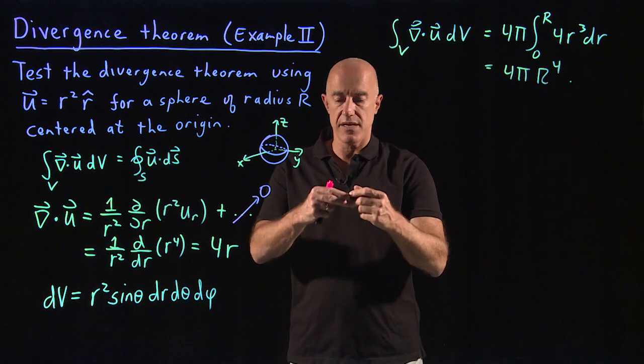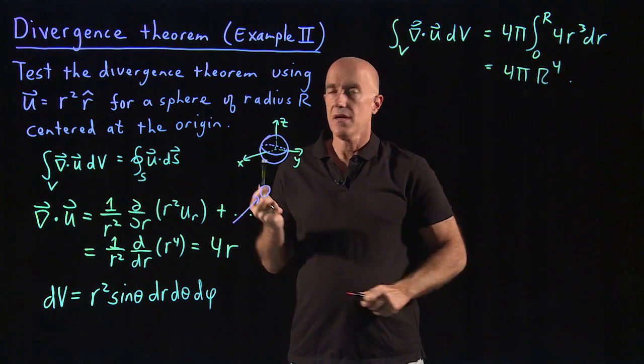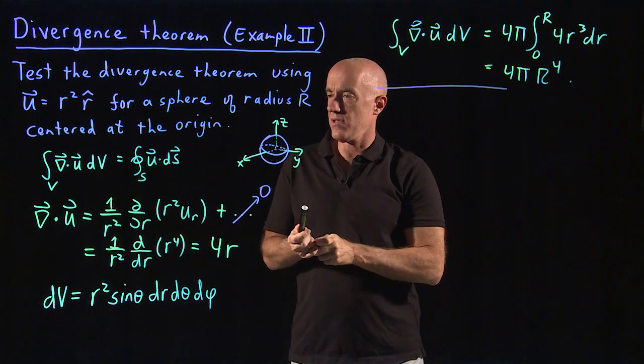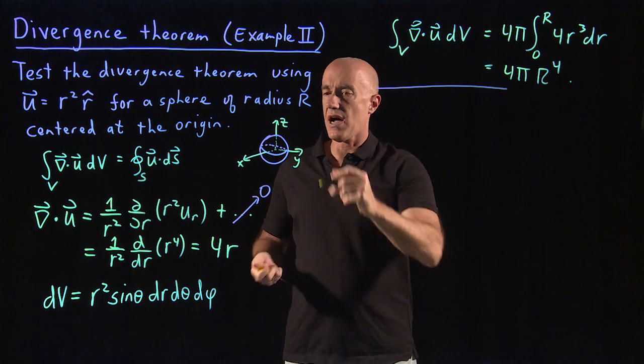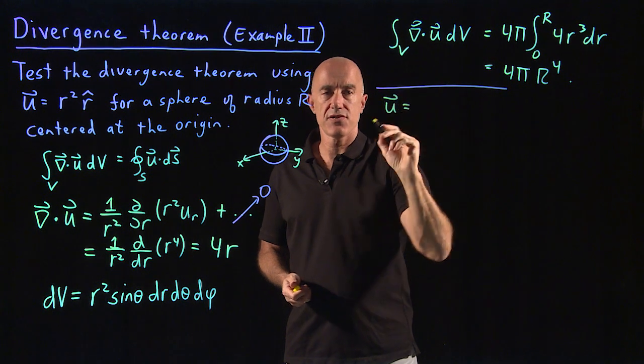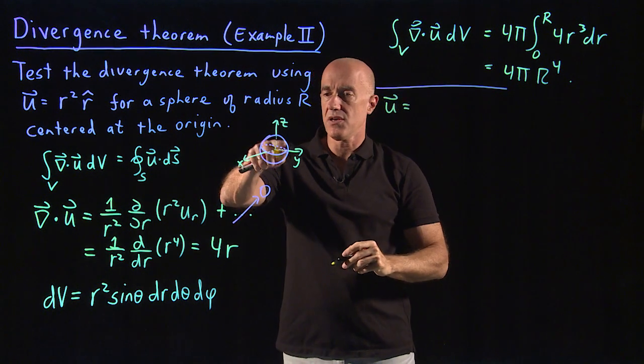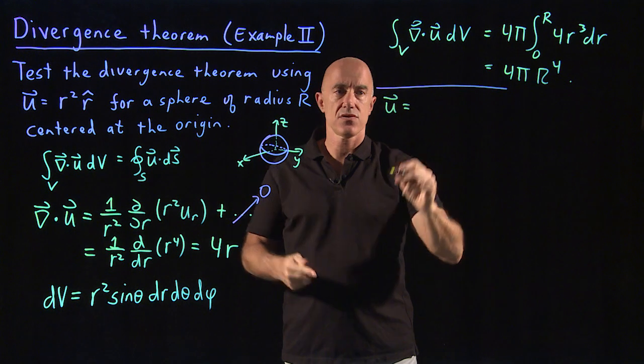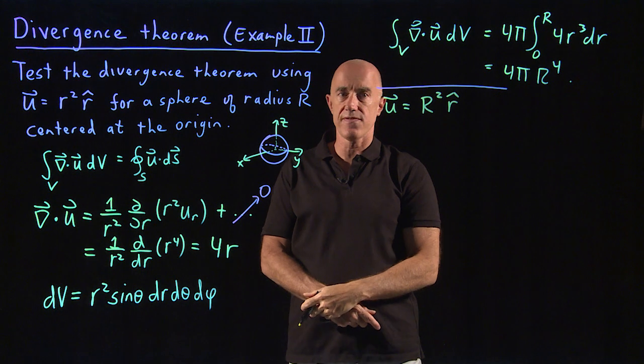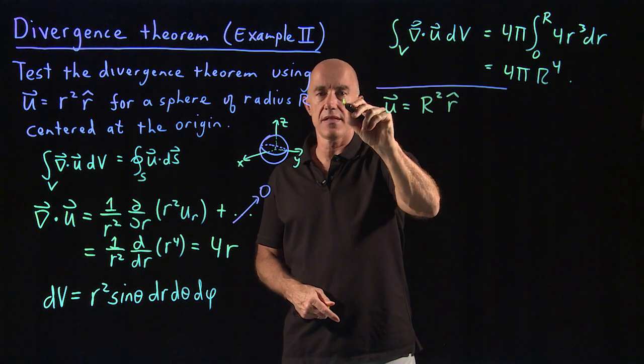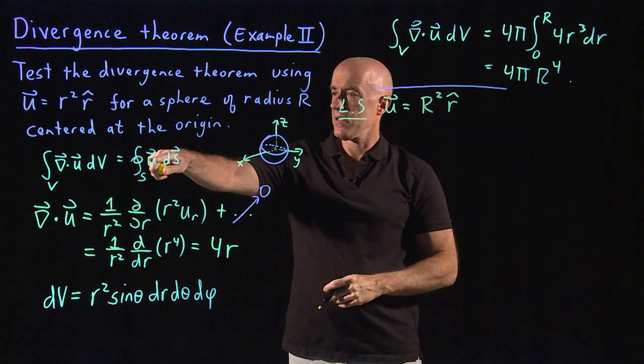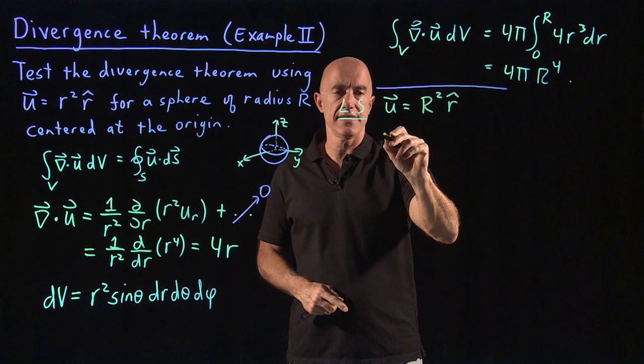What about the right-hand side? The right-hand side is this surface integral of u dot ds. So on the surface of the sphere, u on the surface, then little r is big R. So u is equal to R squared r hat on the surface.